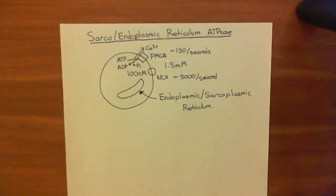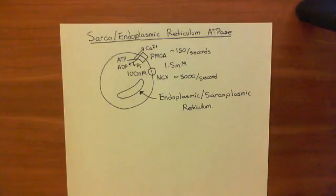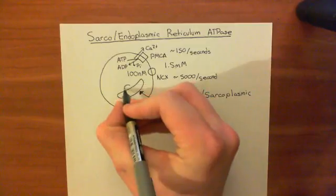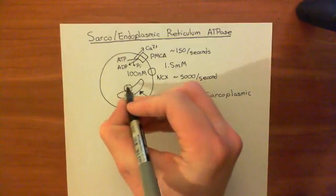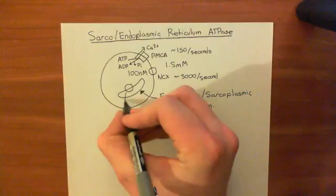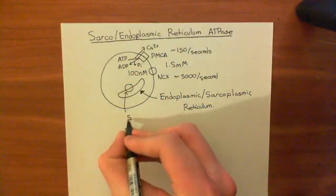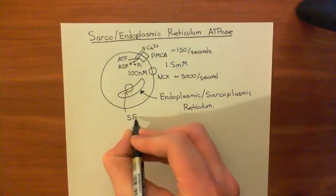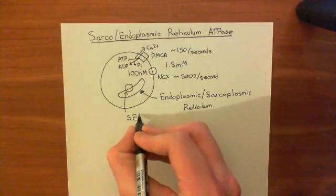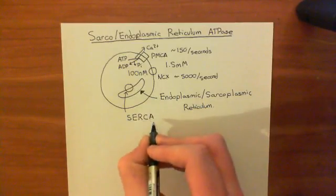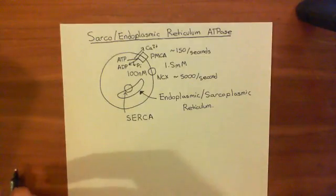Basically, what you need is some pump which is bringing calcium into the endoplasmic reticulum, and this is the sarco/endoplasmic reticulum calcium ATPase. You have a pump in the membrane of the endoplasmic reticulum, known as the sarco/endoplasmic reticulum calcium ATPase, often abbreviated as SERCA — S for sarco, E for endoplasmic, R for reticulum, C for calcium, and A for ATPase. So this is the SERCA pump.